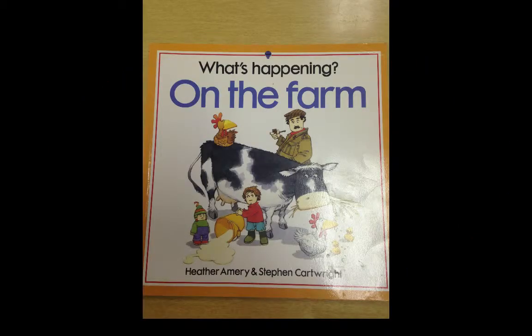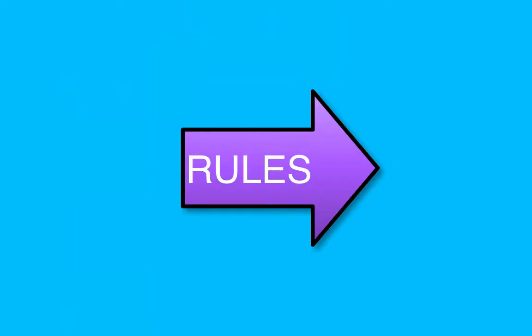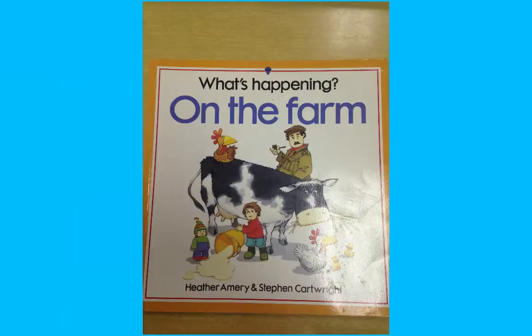Good morning class. Today we'll be reading What's Happening on the Farm. When I am reading, your voices must be at a zero. When you are talking to your partner, you can have your voices at a level one. When I show the blue screen, you may talk to your partner about the question on the page. Talk with your partner about what you think will happen in this book.